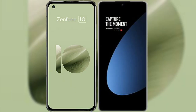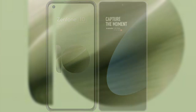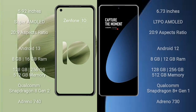I will compare the new Asus Zenfone 10 with Xiaomi 12s Pro. The Asus Zenfone 10 comes with a 5.92-inch Super AMOLED display, while the Xiaomi 12s Pro comes with a 6.73-inch LTPO AMOLED display. Both feature a 20:9 aspect ratio.